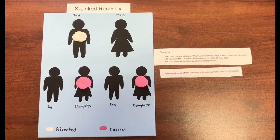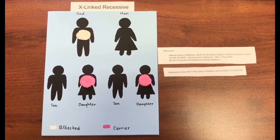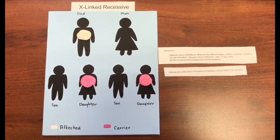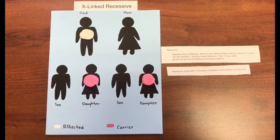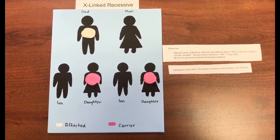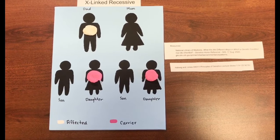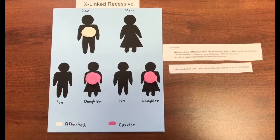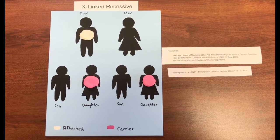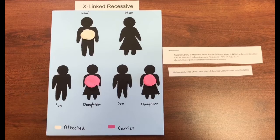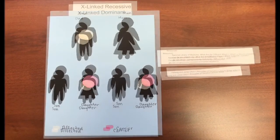One example of mode of inheritance is X-linked recessive, in which usually more males are affected because males can only get their X chromosome from their mother, and it usually skips generations. An example would be hemophilia A. In this situation, the father is affected and the two daughters are carriers.